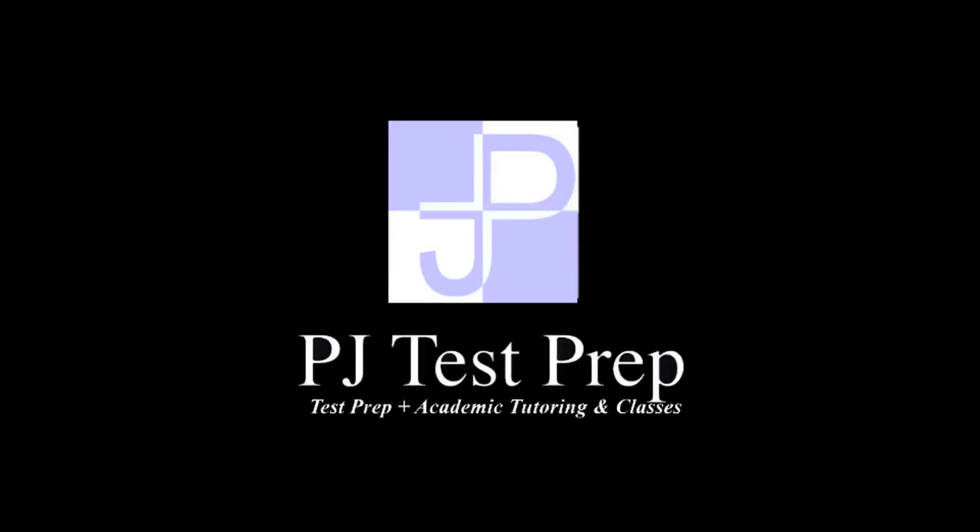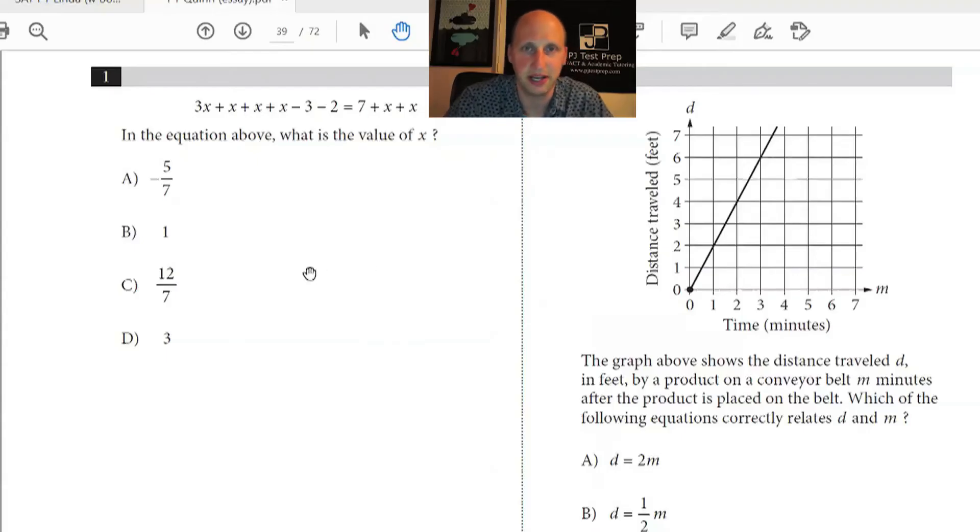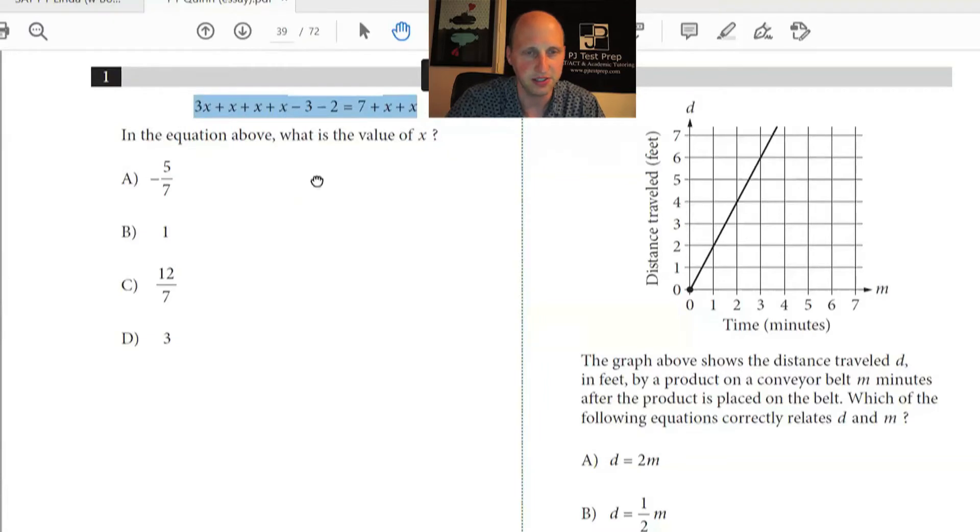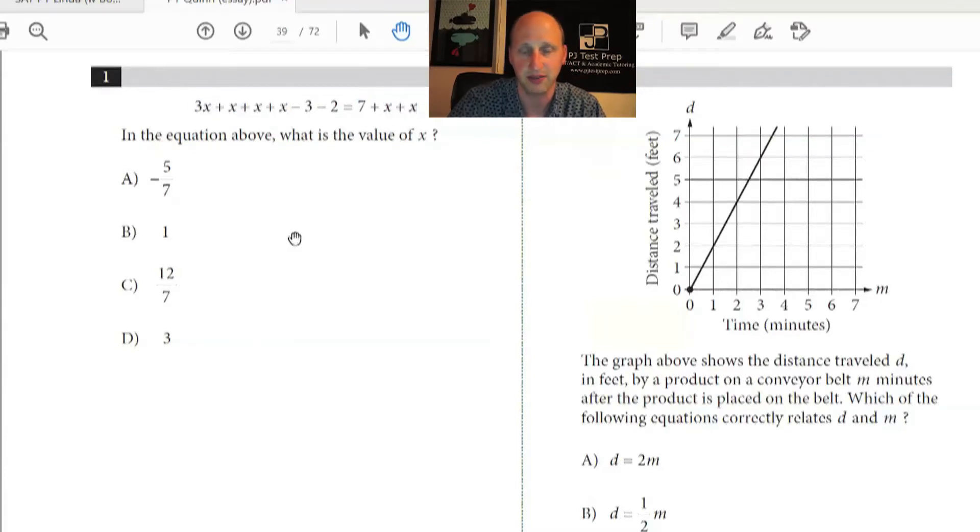There's always a math way and then a trick way to do any SAT problem. First, remember that the questions go from easy to hard, although they do reset when they get to the grid-in questions. But when you're looking at problem number one, this isn't going to be that hard. This looks like pre-algebra or something, so you're just going to combine like terms and move some things around to get the answer.